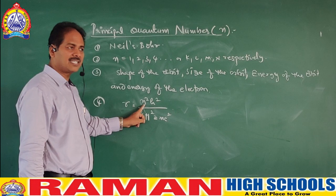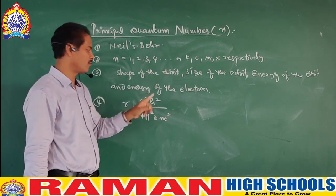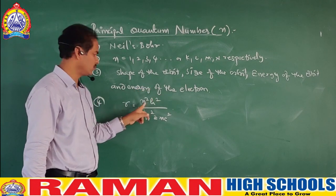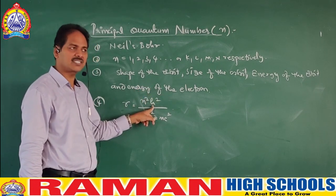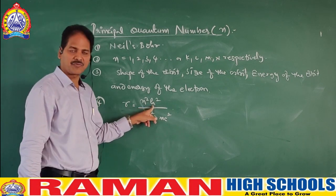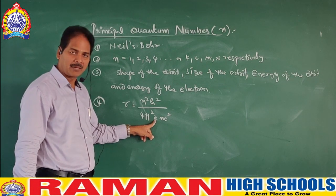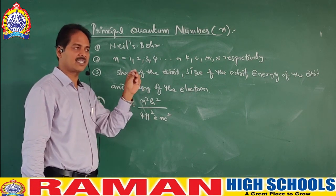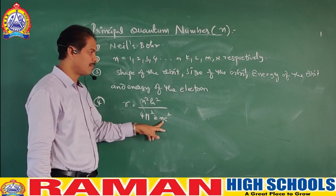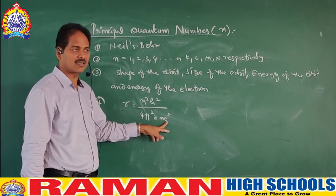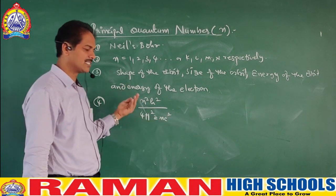This formula is used to calculate the size of the orbit. Here, N is the orbit number — which orbit you want to calculate, first, second, or third. H is Planck's constant, 6.625 × 10⁻³⁴. Z is the atomic number — whether it is hydrogen, helium, or lithium — and M is the mass and charge of the electron. If you substitute these values, we can know the size of the orbit.